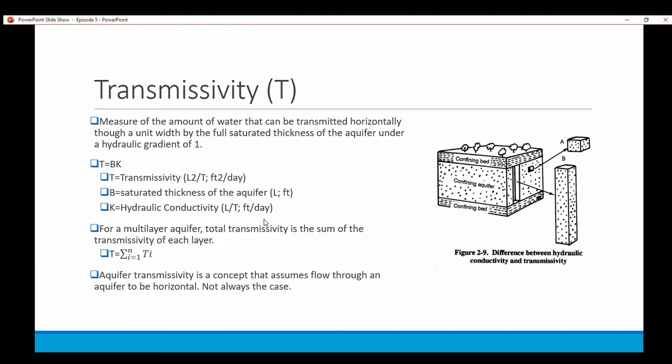Transmissivity would be feet squared per day or length squared per time, and then k equals hydraulic conductivity, foot per day or length per time. For a multi-layer aquifer like we showed in the previous slide, the total transmissivity is the sum of the transmissivity of each layer.